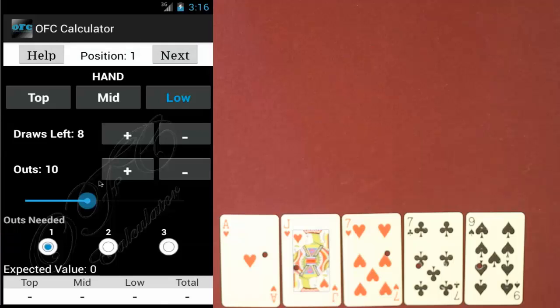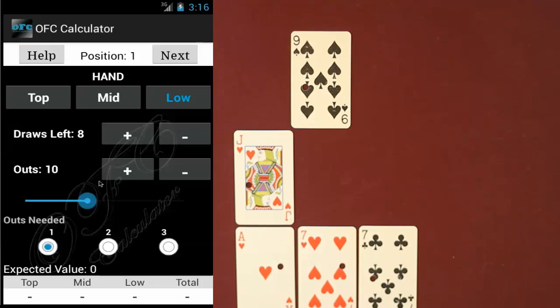Here we're dealt a starting hand and I'm just going to run through a couple ways you might want to play this hand and how the app can help you decide which way is better. Here's one way you might want to play this hand and the first thing you might want to do is find out your chances of making a full house by the end of the hand. To do this you would leave your draws left to eight because you still have eight remaining draws but you would change the number of outs to five. You can do this by either moving the blue slider or using the plus and minus buttons. There's two sevens left and three aces so a total of five outs.